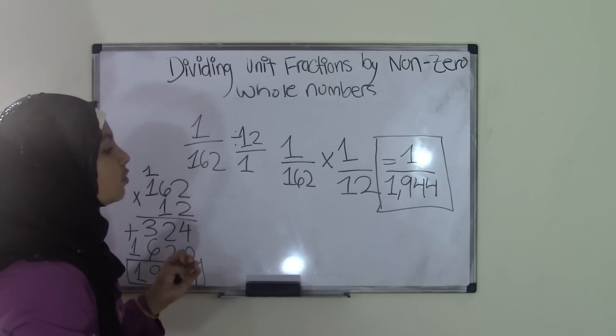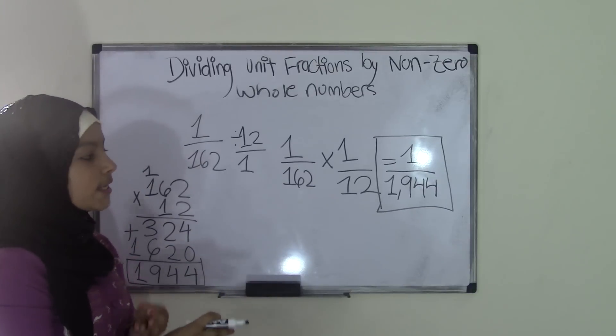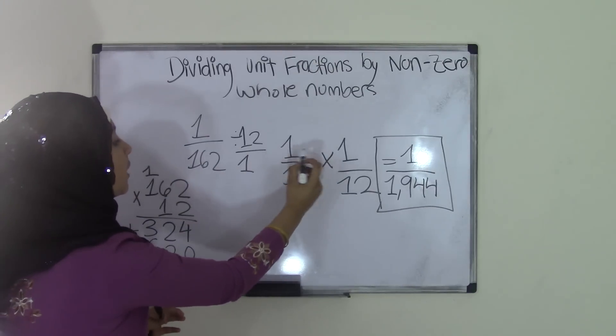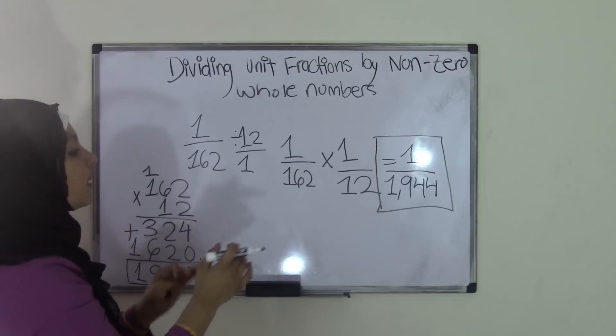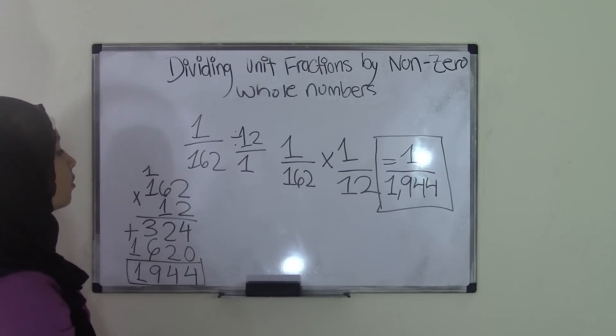Now if you notice one thing, when you do this topic, your numerator is always a 1 because when you switch it over, 1 times 1 is always going to give you 1, right? And your denominator, you just have to do simple multiplication. So that's that for dividing unit fractions by non-zero whole numbers.